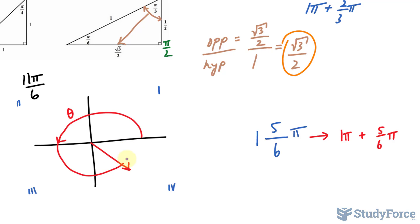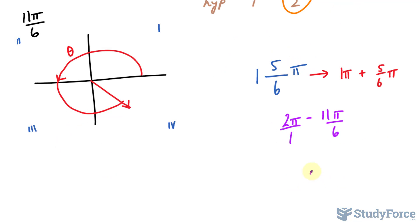Since our angle is here, we will be subtracting 11π over 6 from 2π. Just as before, nothing has changed. 6 times 1 is 6, 6 times 2π is 12π, 1 times 11π is 11π. Subtracting these two, we get π over 6. So that is our reference angle. This part right here, which I'll call theta prime, is equal to π over 6.